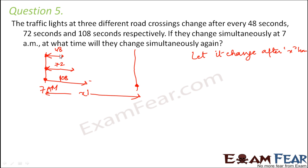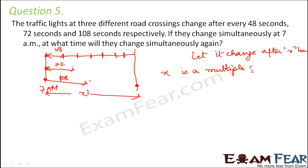This x has to be a multiple of 48, because the first signal changes after every 48 seconds. Similarly, x is also a multiple of 72 and a multiple of 108. So x is a common multiple of 48, 72, and 108.